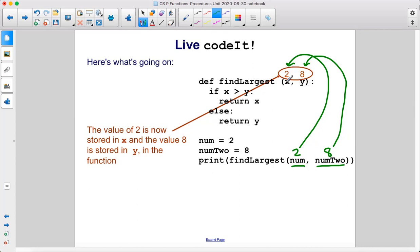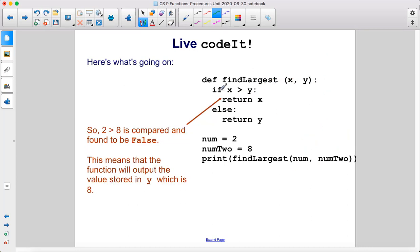The value of 2 is now stored in x and the value 8 is stored in y inside the function. So 2 is greater than 8 is found to be false. So we don't run this. We go to the else and we return y which is 8.